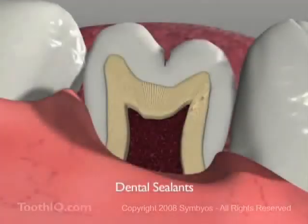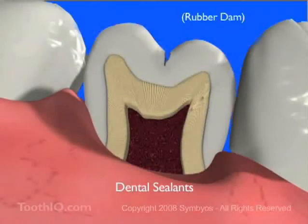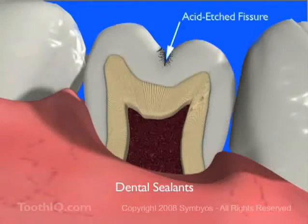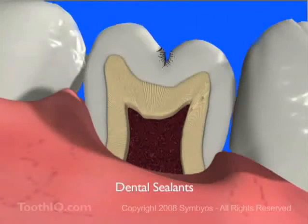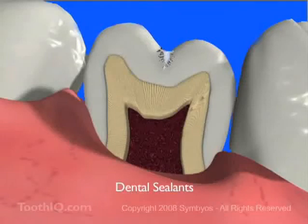Following thorough plaque removal from the pits and fissures, the tooth is isolated from all mouth moisture and the grooves are etched with a mild acid solution. This produces a microscopically roughened surface into which the sealant will adhere. The sealant is then applied to the grooves as a viscous liquid, which hardens on its own or by exposure to a blue light. Once placed, the sealant prevents bulk plaque from being able to accumulate in the pits and fissures.